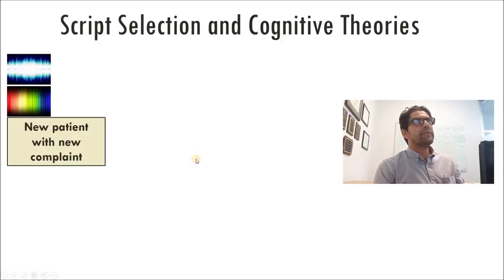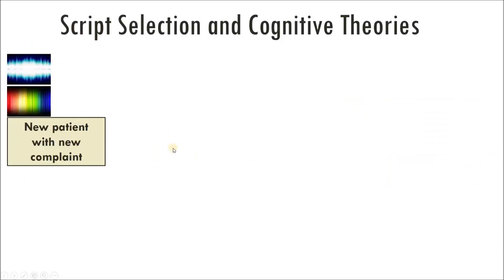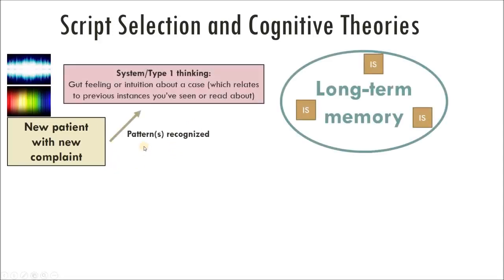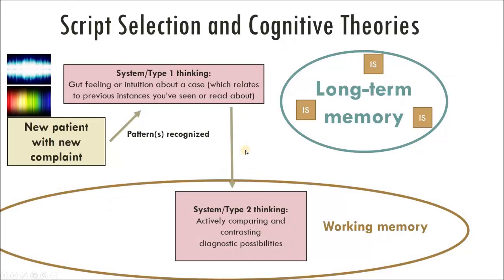Let's look at the theoretical considerations of illness scripts and script selection. When we're seeing a new patient with a new complaint, we're getting visual and auditory input. We might recognize a pattern — that's system one thinking, a gut feeling or intuition that relates to previous instances of that disease. If someone comes in with dyspnea, hemoptysis, and a recent orthopedic injury with two weeks off their feet, that's invoking my illness script for pulmonary embolism. I might then use system two thinking to compare and contrast diagnostic possibilities, testing those data points against illness scripts in working memory.